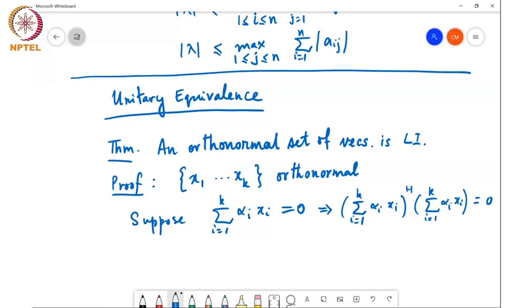A 0 vector in a product with itself will give you 0. And when I expand this inner product, so the left hand side is equal to sigma over i j from 1 to K, alpha_i alpha_j Xi Hermitian XJ. But Xi Hermitian XJ is equal to 0 if i is not equal to j because they are an orthonormal set of vectors. So this is equal to sigma,